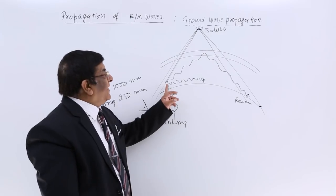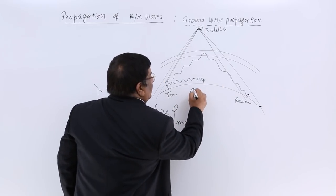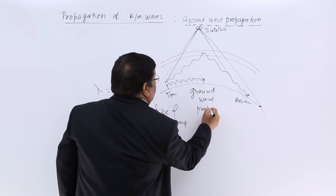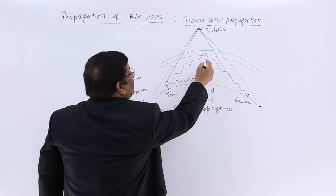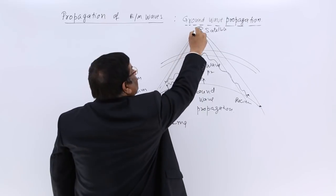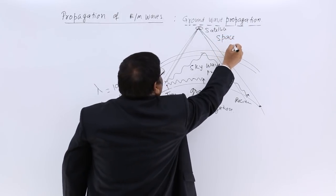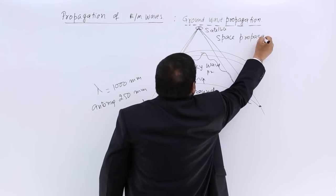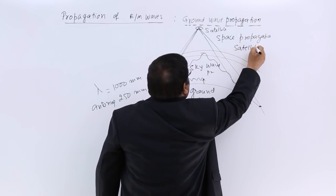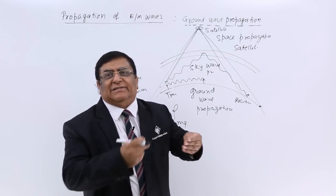We have categorized wave propagation into three categories. Waves going parallel to the ground are known as ground wave propagation. Waves reflected from the sky are known as sky wave propagation. Waves going to space and returning via satellite are known as space propagation or satellite propagation. There are two types: one taking help of a satellite, and one which is line of sight propagation.